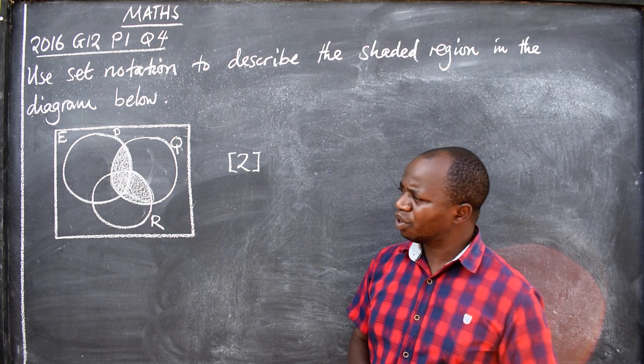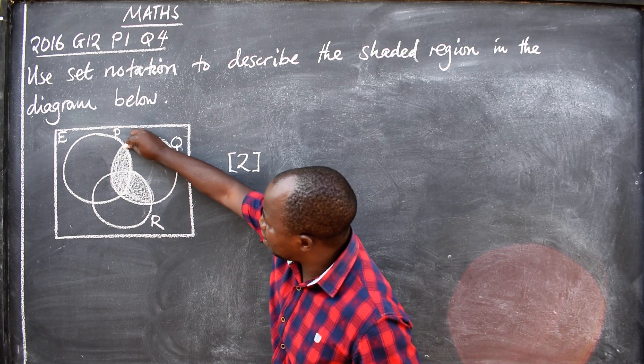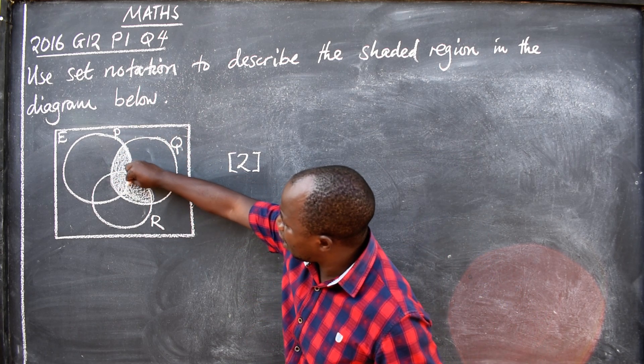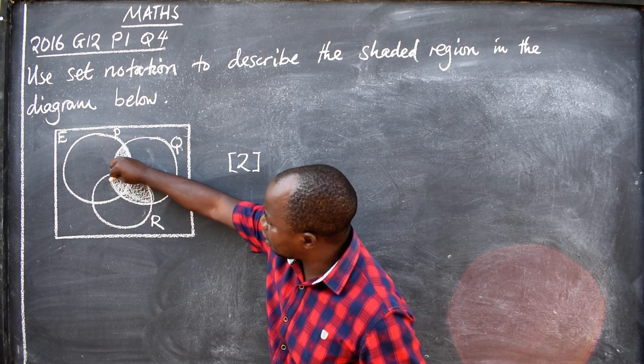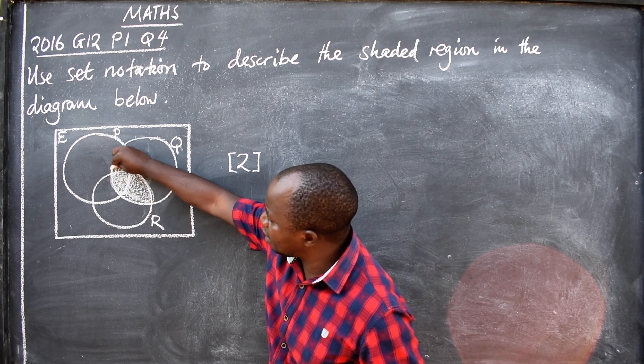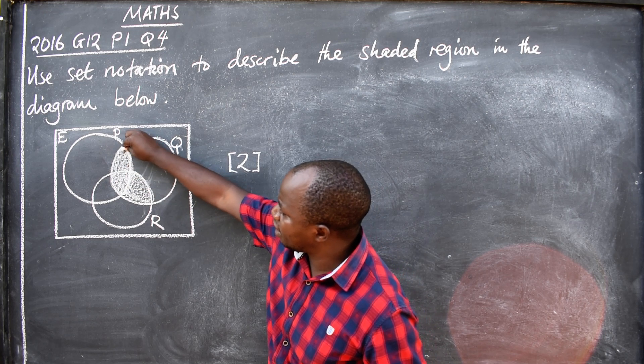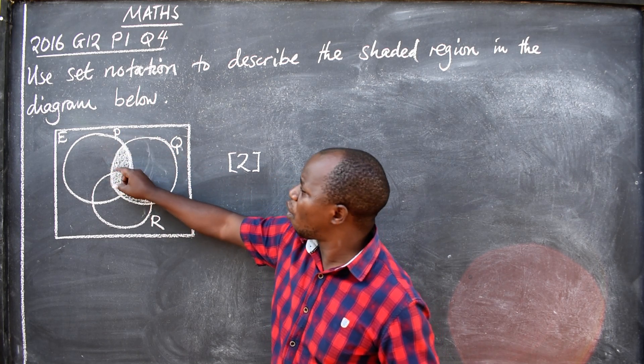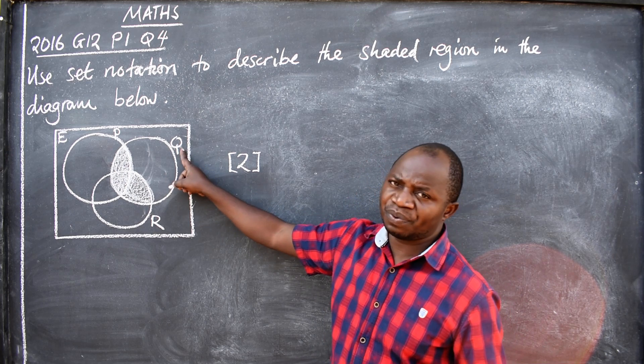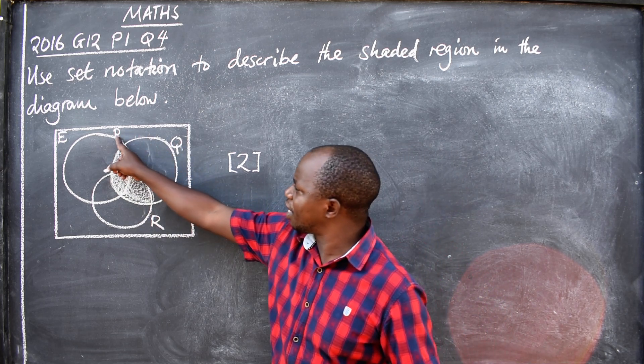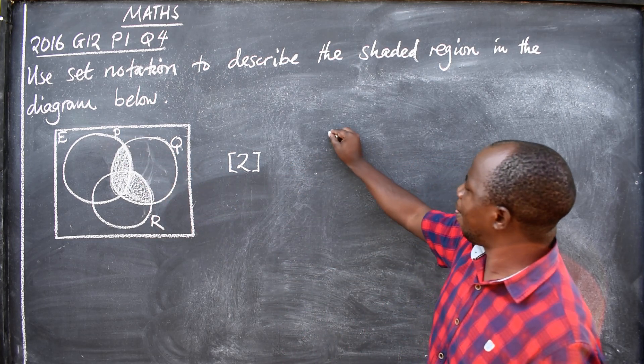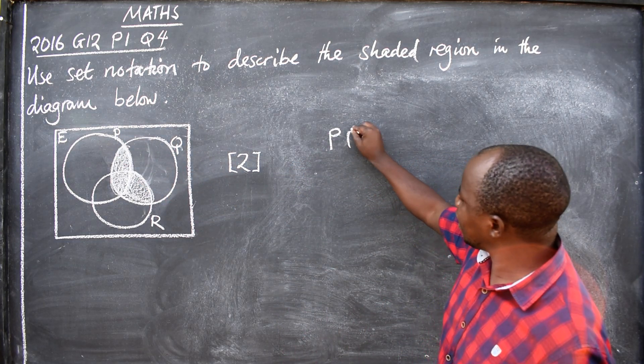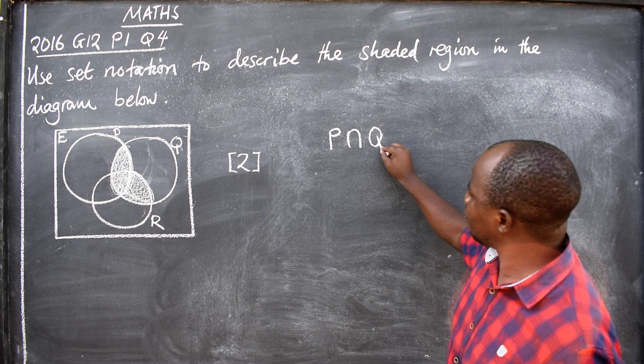What does the shaded part here mean? We are going to start with this region here. This shaded region implies that this area is the intersection of P and Q. This is the shaded part, so we are going to write here P intersecting Q.